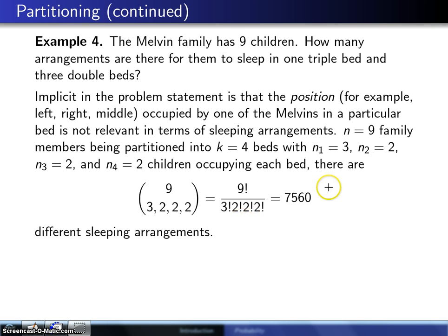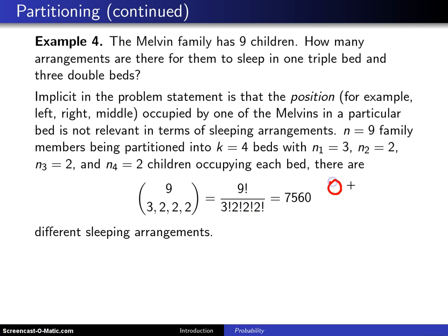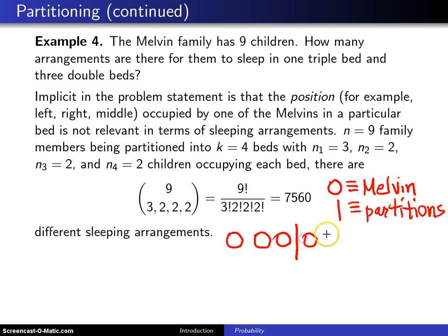So I'm going to draw a graphic down here. We will let a circle denote one of the Melvin children, and we will let bars serve as we have in the past as partitions. And so basically what you've got is here's the triple bed, takes care of three of them, and then here's one of the double beds, and another double bed, and another double bed.